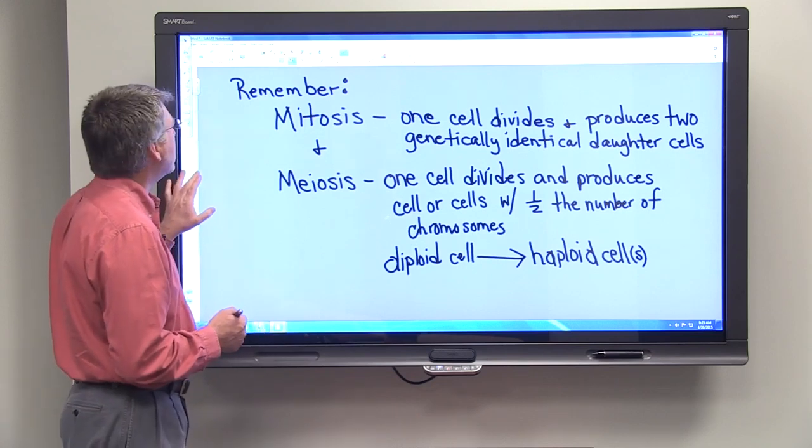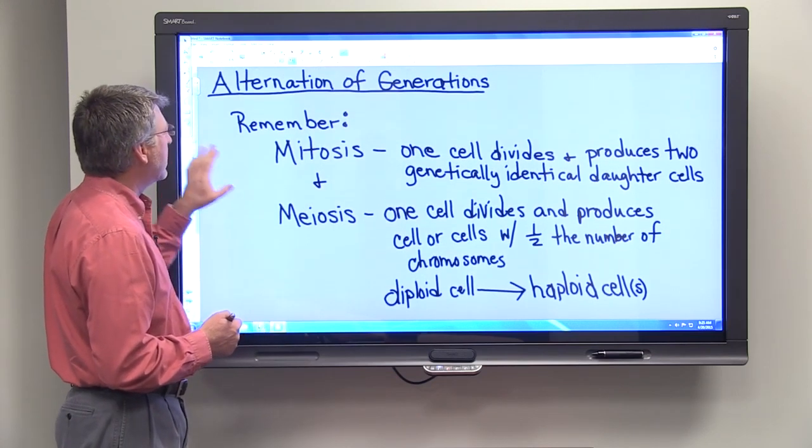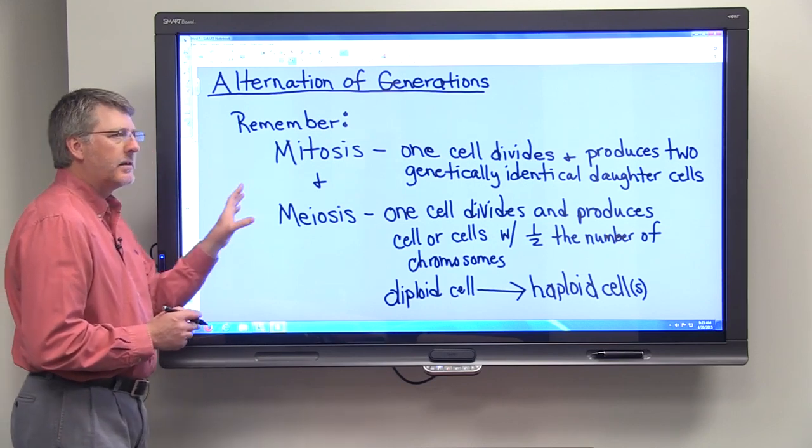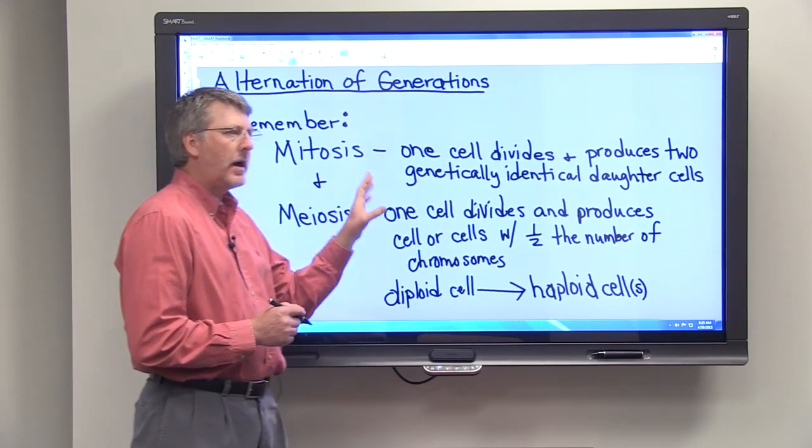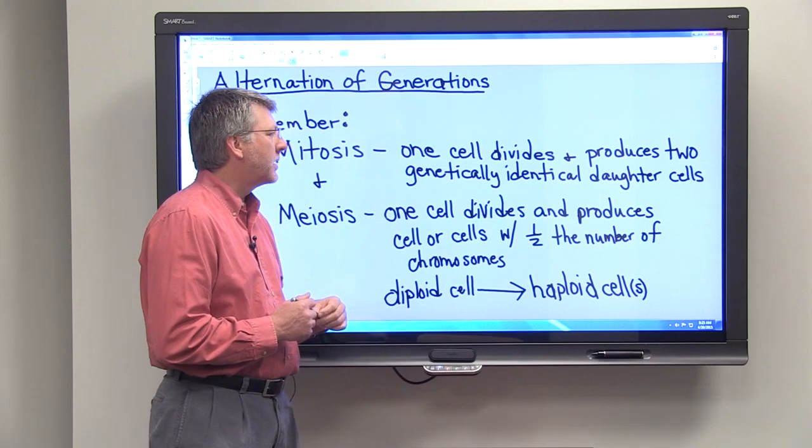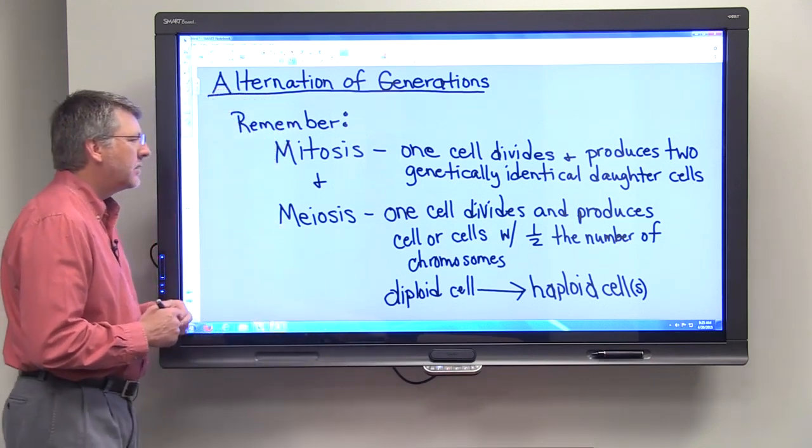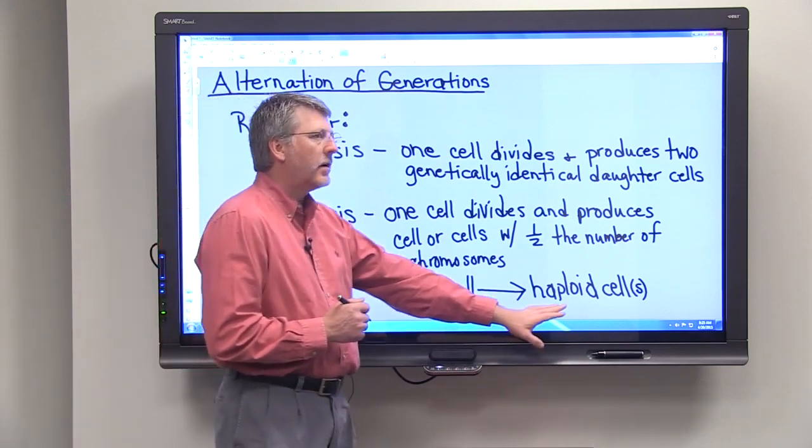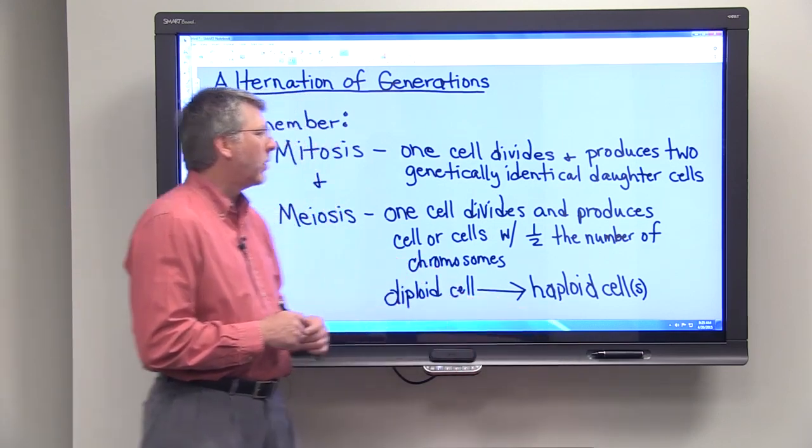So alternation of generations uses both mitosis and meiosis. Mitosis, one cell divides, produces daughter cells that are genetically identical. Meiosis, when the cell divides, the resulting cell is haploid.